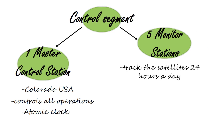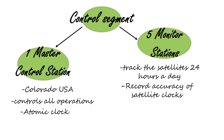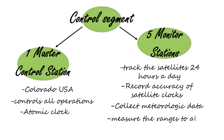The monitor stations receive the same information from the satellite that the MMRs in the airplane receive. The monitor stations record the accuracy of a satellite clock, collect and relay to the control station meteorological data such as barometric pressure, temperature, and dew point. The master control station uses this data to calculate the tropospheric signal delay. The monitor stations also continually measure the ranges to all visible satellites.